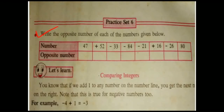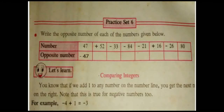When you write opposite numbers, you have to write the number as it is. Only you have to change the sign — plus becomes minus and minus becomes plus. First one is 47. Number 47 has no sign, that means it is a positive number. So plus 47 becomes minus 47. Next, plus 52.